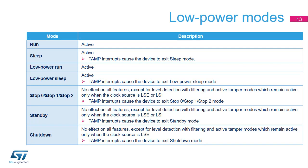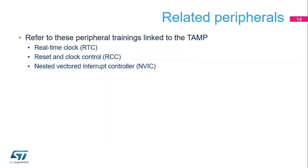The TAMP peripheral is active in all low-power modes and the TAMP interrupts cause the device to exit the low-power mode. In stop 0, stop 1, stop 2, and standby modes, only the LSE or LSI clocks can be used to clock the TAMP. Only the LSE is functional in shutdown mode. This is a list of peripherals related to the TAMP; please refer to these peripheral trainings for more information if needed: real-time clock, reset and clock control, and nested vectored interrupt controller.